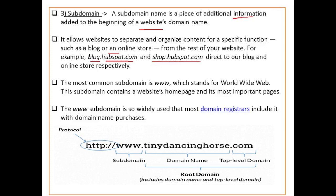For example, shop.hubspot.com — here 'shop' is the sub domain added to the domain name. The most common sub domain is www, which stands for World Wide Web. This sub domain contains the website homepage and its most important pages. www is so widely used that most domain registrars include it with domain name purchase.